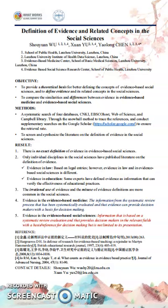We screened and synthesized literature on the definition of evidence in the social science by a systematic search. During the systematic search and initial screening process, we found researchers started to use evidence in social science. However, there is no exact definition of evidence in evidence-based social science.